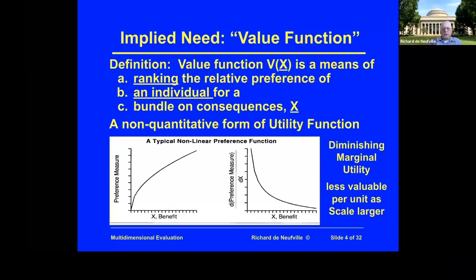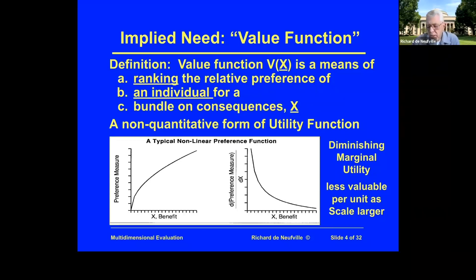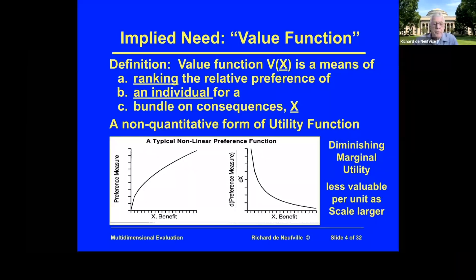Going from that, I'd like you to think about a value or value functions. A definition here is the value function v of x, where x — underlined in traditional notation to mean it's a vector — represents all the possible things that may go into your value. If you're thinking about buying a new car, you might consider its size, cost, fuel economy, color, whether it's a convertible, or space for carrying things like a van. So all the x's that make up the value for this particular thing. The value function is a means of ranking the relative performance of the x's for an individual for a bundle of consequences — that is, all the measures or attributes of it.